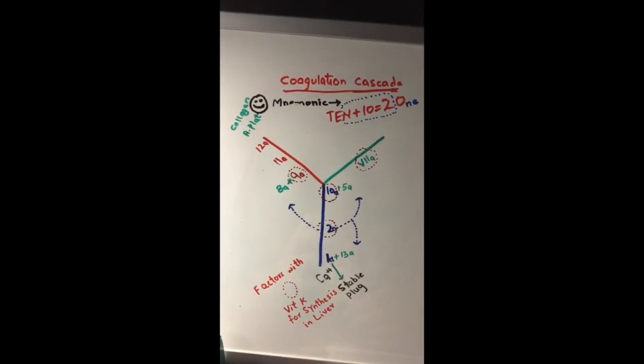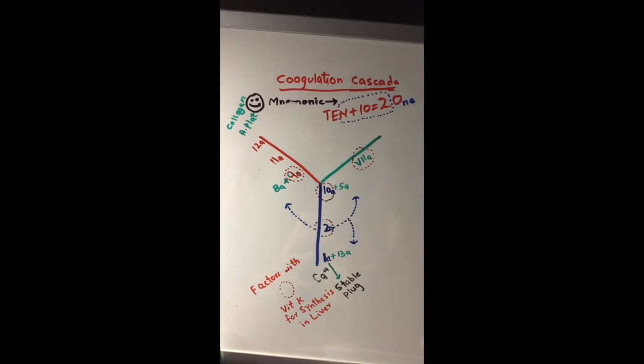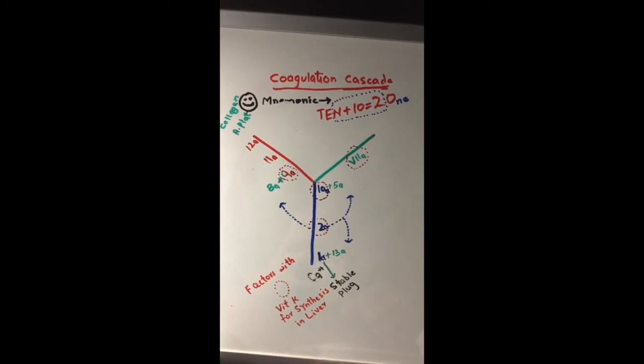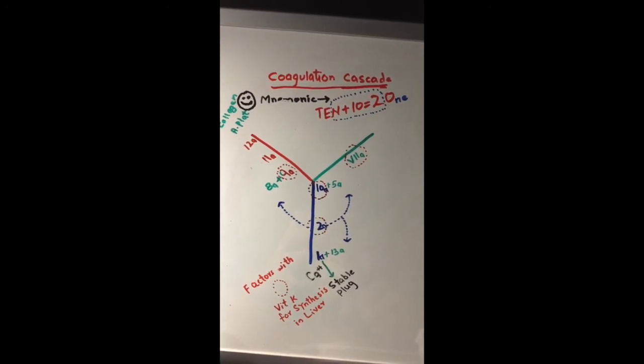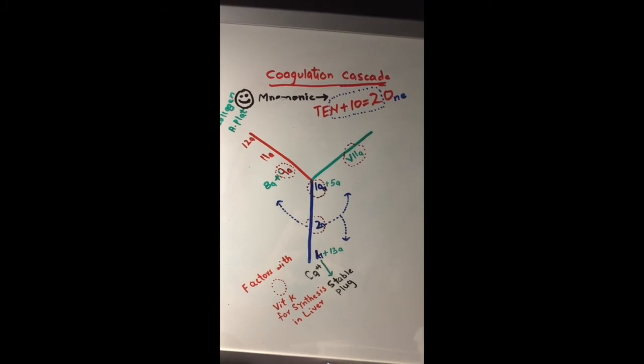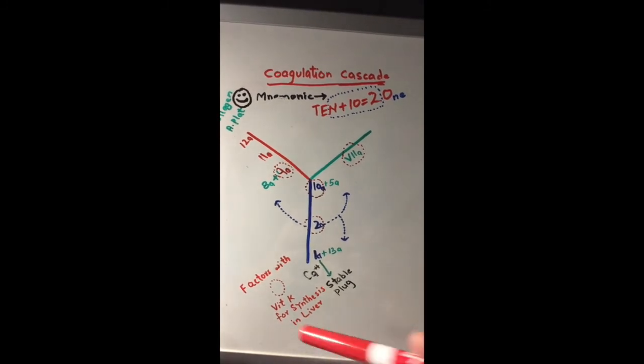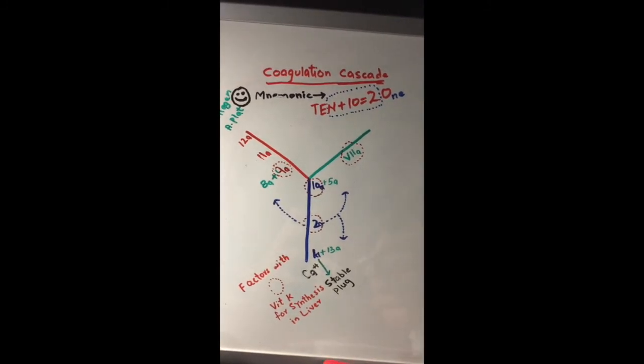Now I have summed up everything in this simplified diagram. One more thing I'd like to mention: the factors with dotted lines around them need vitamin K for their synthesis in the liver.